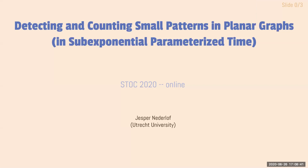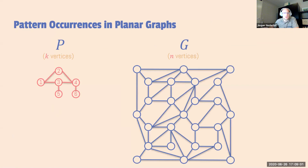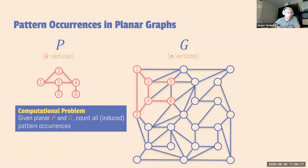I hope you can hear me. This paper is about pattern occurrences in plane graphs. Let P be a pattern graph on K vertices and G a host graph on N vertices. A pattern occurrence is a mapping of the vertices of P to the vertices of G that witnesses P occurring as a subgraph of G. The computational problem I address is: given P and G, count all the pattern occurrences. There are also induced pattern occurrences where the witness should show P occurring as an induced subgraph of G.